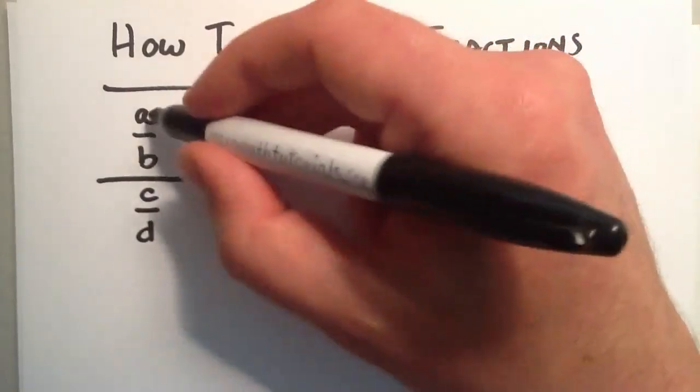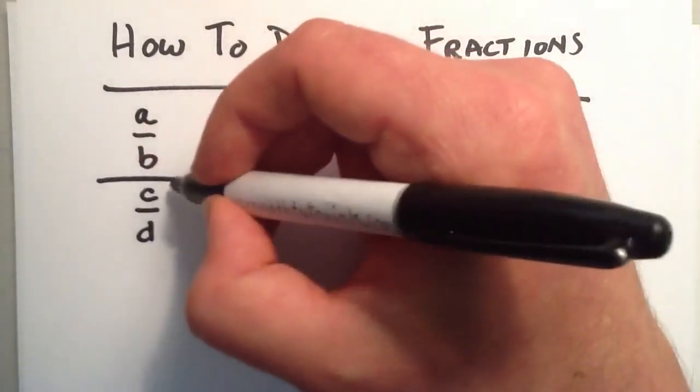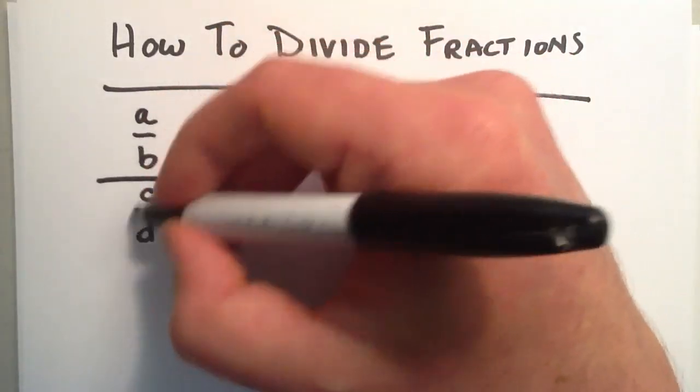So this is a division of fractions. And really, if you notice, this is really just one big fraction with a fraction in the numerator and a fraction in the denominator.